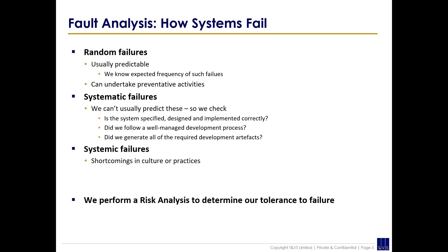Systemic failures are failures in the culture or practices of the organisation. Normally, for example, there may be a poor quality management culture or process, and that's normally detected by external reviews — like quality audits — or we can have an external auditor come in and look at our culture and practices and try to remedy those.